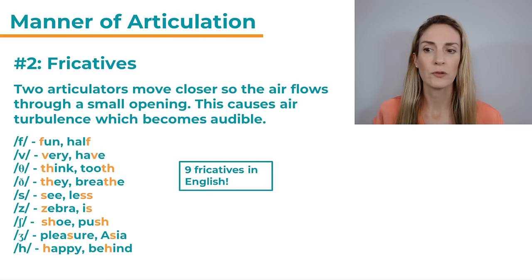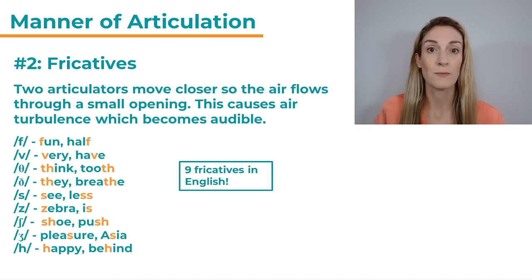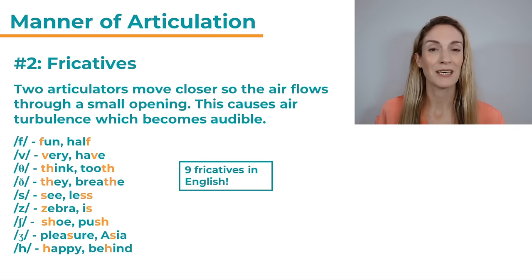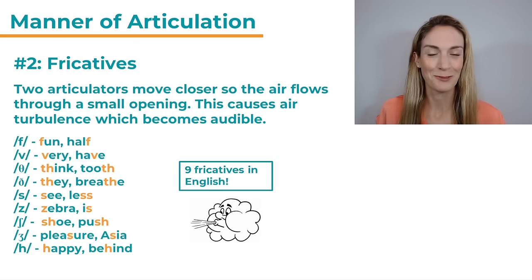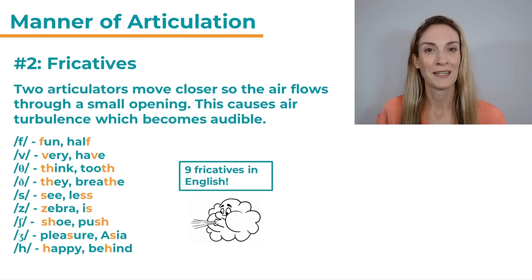The fricatives include: the unvoiced TH in think and tooth, the voiced TH as in 'the' or breathe, S in sea or less, Z in zebra or is, SH in shoe and push, the ZH sound in pleasure and Asia, and H in happy and behind. So we have nine fricatives in English — the biggest group of sounds. In SH, you can notice a small closure near the teeth and the air passing through — we can hear the air turbulence. All of these share the same manner of articulation, but differ in place and voicing.